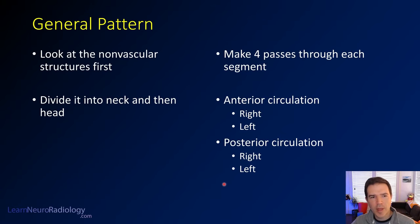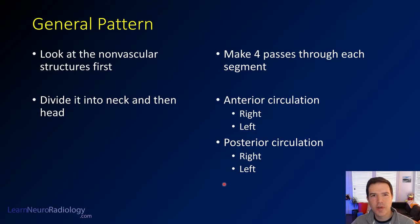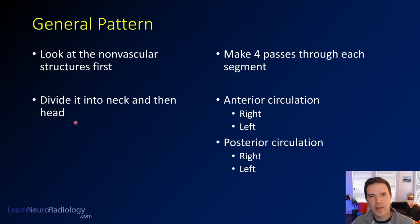In general, my pattern is to look at the non-vascular structures first. It's nice to go ahead and look at the lungs, the bones, the thyroid — kind of get those things out of the way. And then divide your study into the neck and then the head, so look at the bottom half and then the top half.